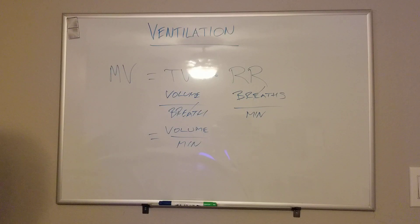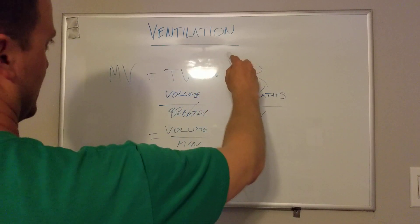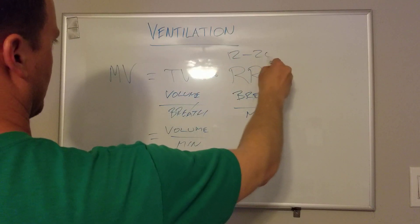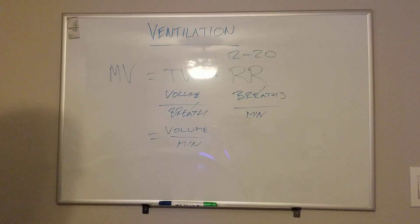Normal values for respiratory rate is we usually say like 12 to 16 is like a normal adult respiratory rate. Some people extend that to 10 to 20, 12 to 20, etc. It could be hyperventilated and greater than 20.